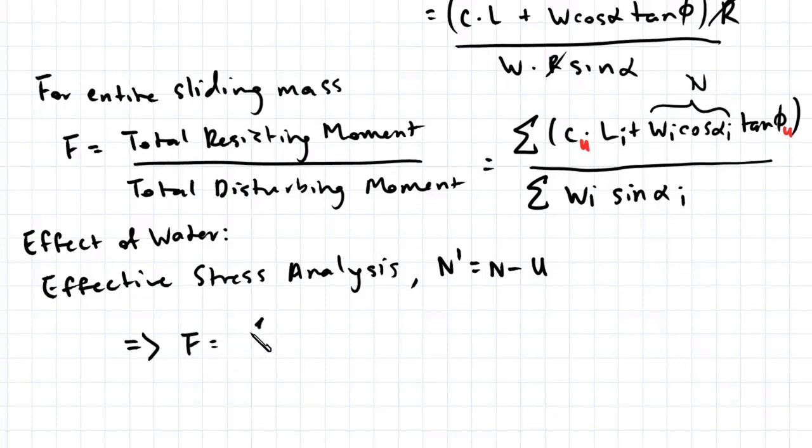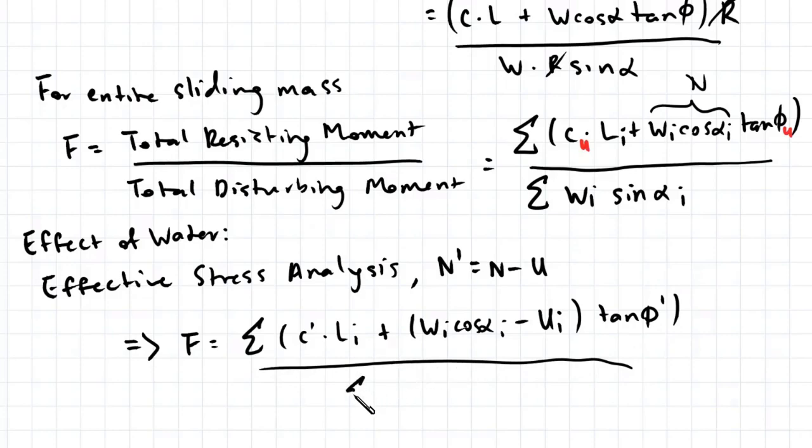F is equal to sigma C dash—this is effective stress analysis now—plus Wi cosine alpha i minus Ui, the pore pressures acting at the base of the individual slice, times tan phi dash, divided by sigma Wi sine alpha i.